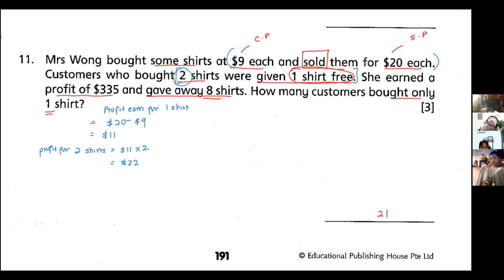Then profit earned from each customer who bought two shirts. Now I'm looking at this. So those customers actually bought two shirts given one free. So the two shirts is $22, take away the one shirt that she bought at $9. So it is $13. Her profit is $13 for those who buy two shirts.